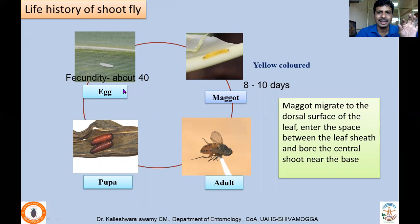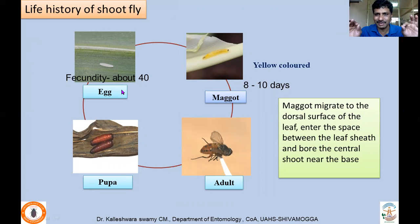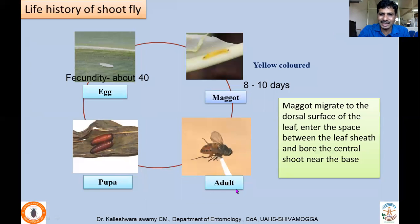Regarding shoot fly biology: fecundity is about 40 eggs, usually a single egg laid per plant — this avoids competition. The adult female can identify previously damaged plants where larvae already exist, and she releases an oviposition-deterring pheromone, also called spacing pheromone, to avoid competition. The maggot period is about eight to ten days. After hatching, the maggot crawls to the leaf surface, enters the space between the leaf sheath and the central shoot, causing the dead heart.